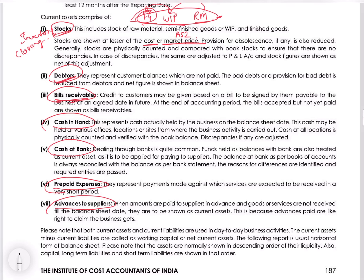Bills receivables are nothing but one more form of debtors, so they are also a current asset. Cash in hand is whatever money the company keeps in hard form cash, and cash at bank refers to your bank accounts. Prepaid expenses — for example, rent paid for more than 12 months in this accounting period — the extra amount paid which is not related to that accounting period is a prepaid expense, which is an asset because it is still not due but you have paid in advance.